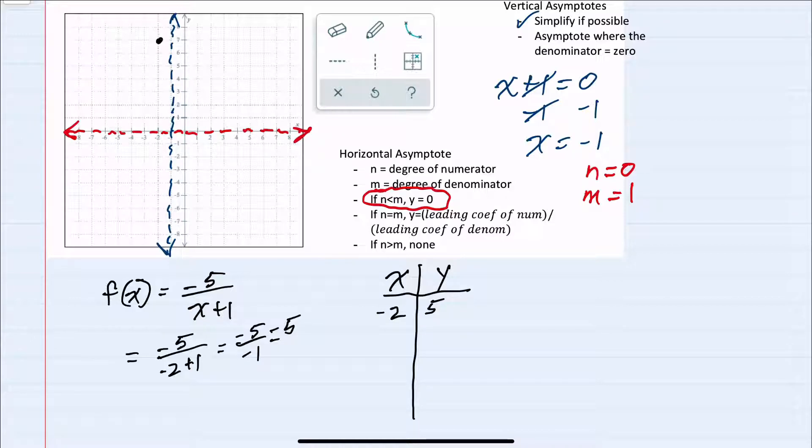I'll plot that on our graph. And then another value to the left of that vertical asymptote could be x equals negative 3. Substituting in a negative 3 gives us negative 5 over negative 3 plus 1, or negative 5 over negative 2, which is a positive 2 and a half. So plotting that, negative 3, positive 2 and a half.